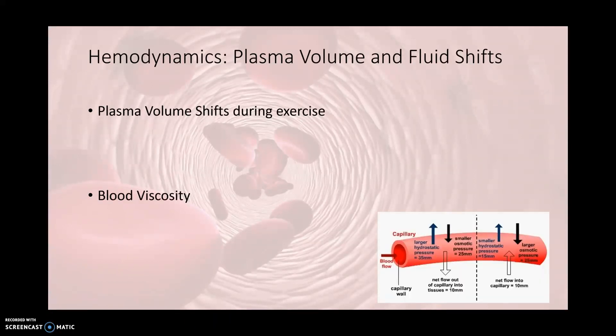When we talk about hemodynamics, we'll talk about plasma volume and fluid shifts. At the onset of exercise, there will be an initial increase in plasma volume, thought to be a protective mechanism so that the blood does not become too hemoconcentrated too quickly. As a person continues to exercise, they will lose plasma volume due to sweating. Fluid shifts will occur from the intravascular space to the extravascular space, caused by an increase in intercapillary hydrostatic pressure, which favors filtration out of the intravascular compartment.